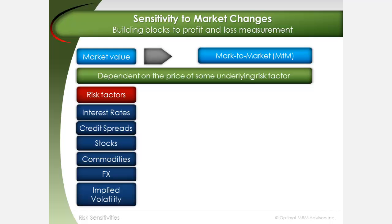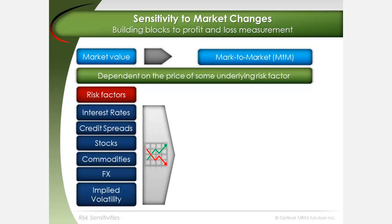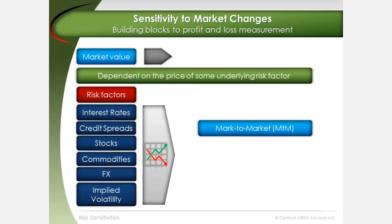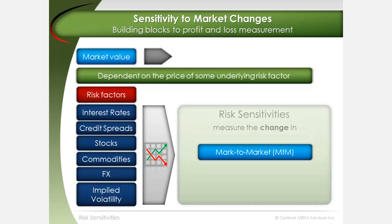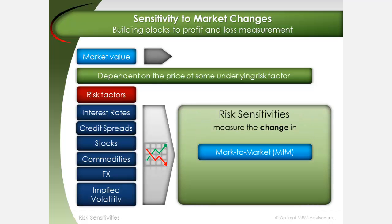As individual risk factor values, prices and rates change, so does the mark to market of an investment. Risk sensitivities measure the change in mark to market relative to changes in the value of corresponding underlying risk factors. The simplest and most commonly used risk sensitivities are known by the Greek symbols delta, gamma, vega, and theta.